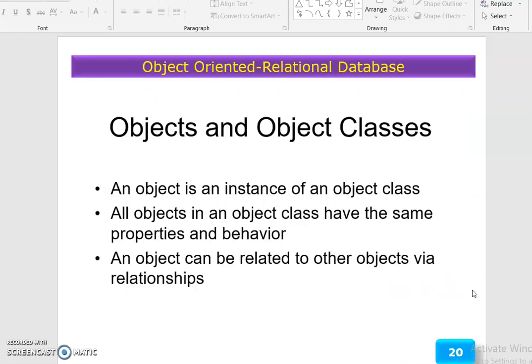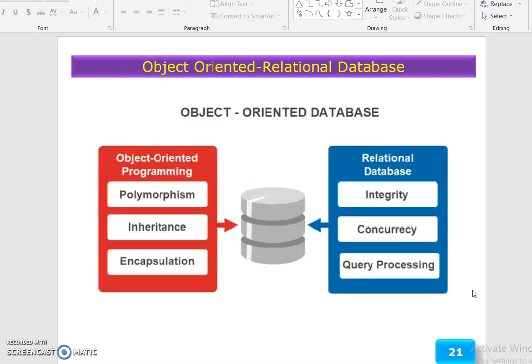Object-oriented relational database: An object is an instance of an object class. All objects in an object class have the same properties and behavior. An object can be related to other objects via relationships.